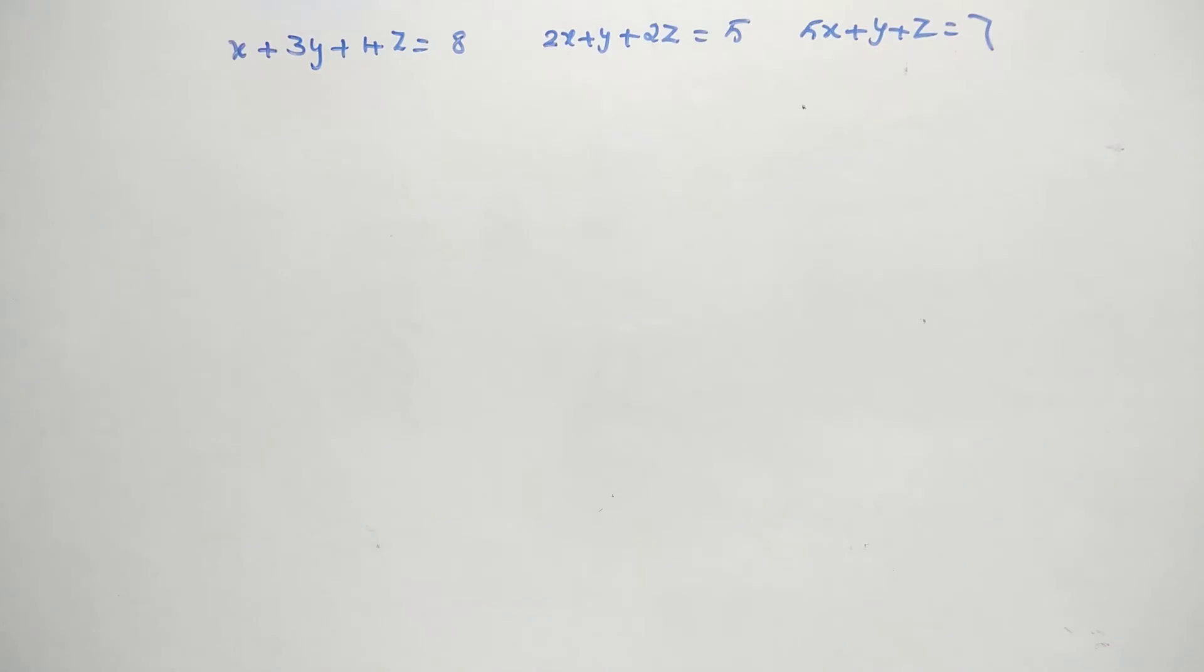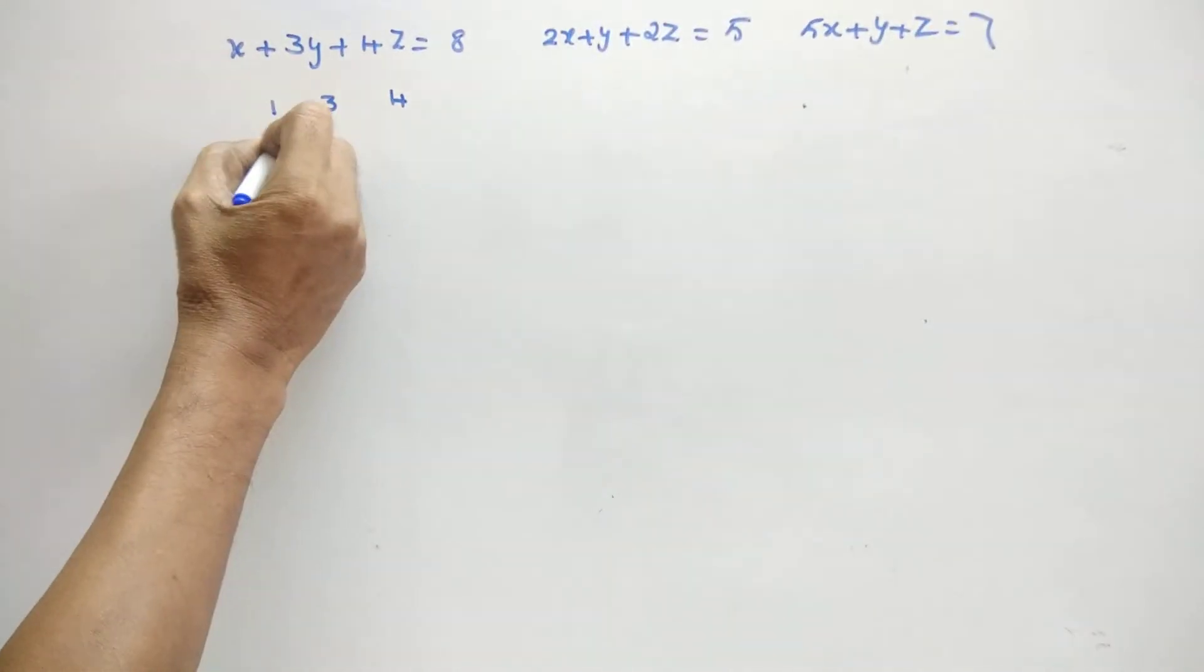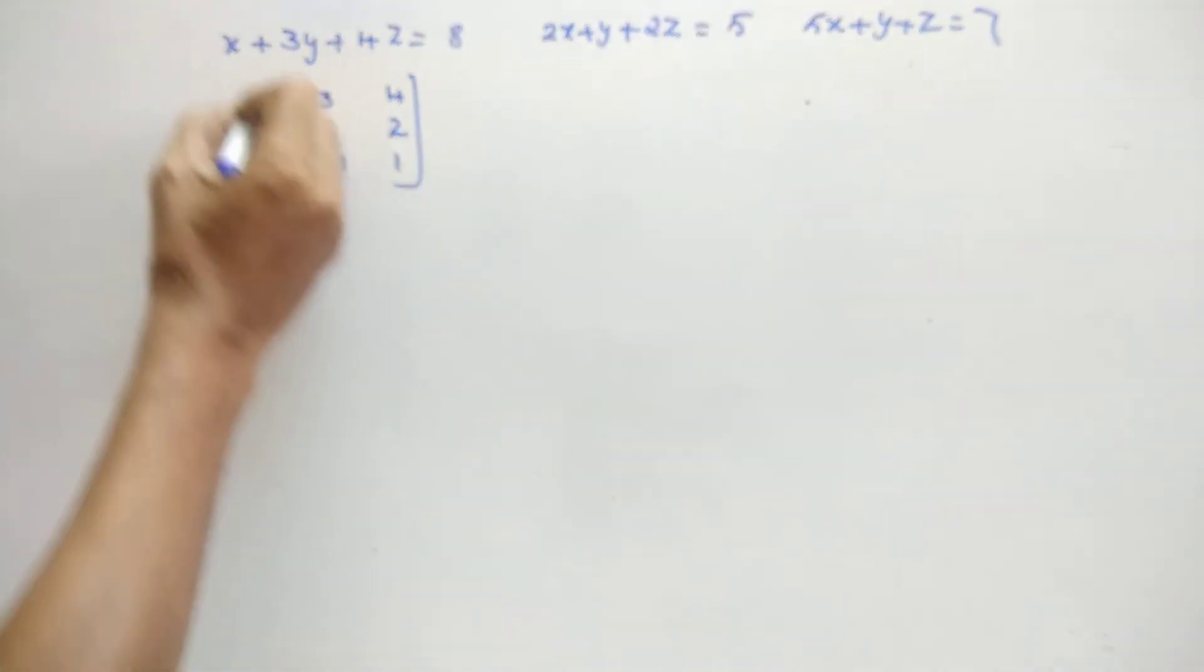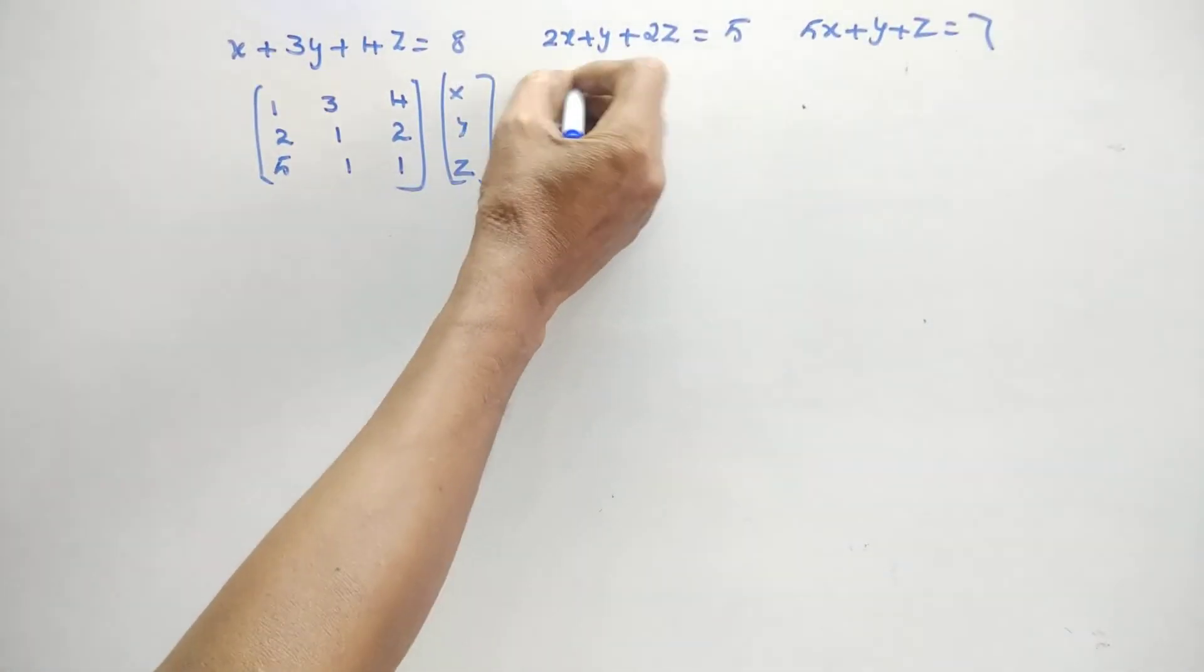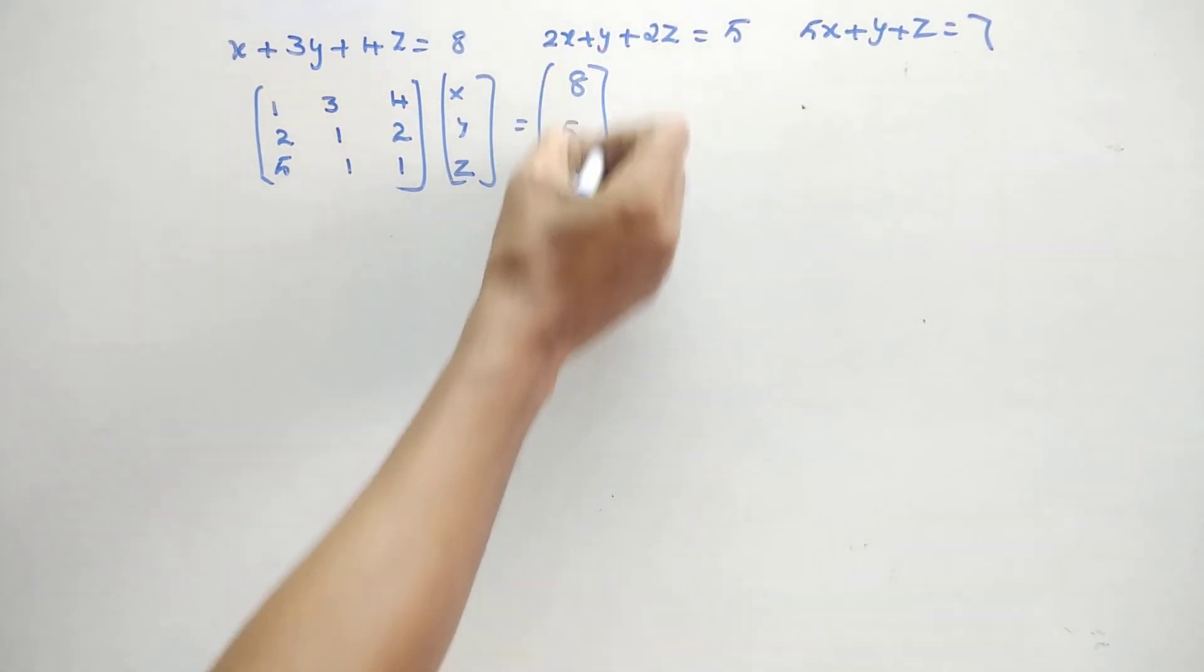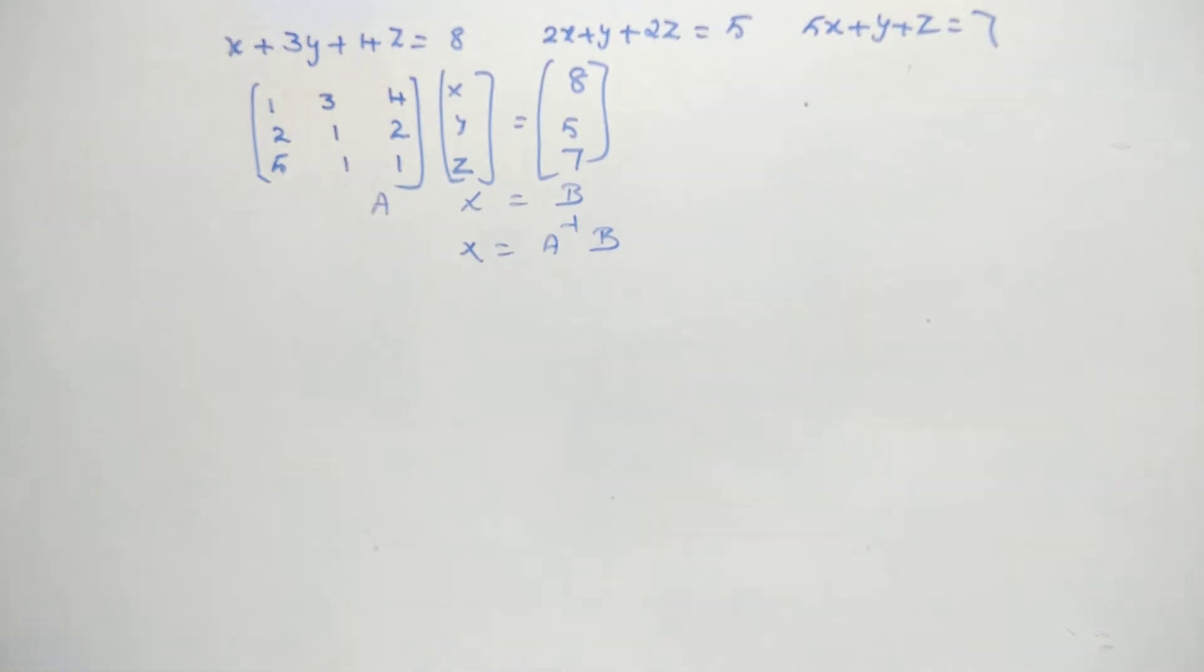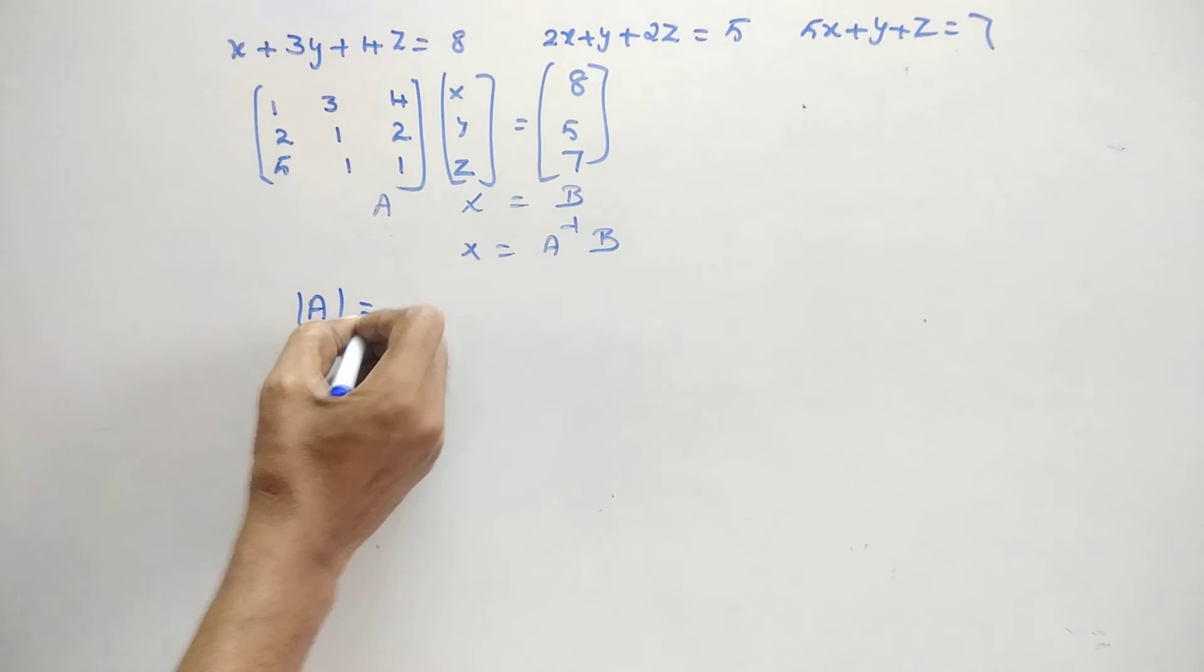Now for a 3 by 3 matrix, I am taking these 3 equations: x plus 3y plus 4z equal 8, 2x plus y plus 2z equal to 5, 5x plus y plus z equal to 7. You write the equation in the given matrix form. That is 1, 3, 4, this is 2, 1, 2, and this is 5, 1, 1. And this will be x, y, z, and then this will be 8, 5, 7. So this is your A matrix and this is x equal to say b. Therefore, x you will be getting by finding out A inverse and pre-multiplying with that. So x will be equal to A inverse times b. This you know.